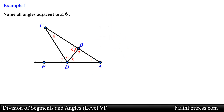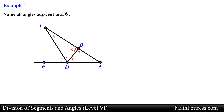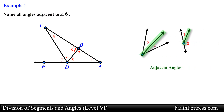Let's start by going over the first example: Name all angles adjacent to angle 6. In this problem we are provided with a diagram and are asked to name all the angles adjacent to angle 6. Recall that adjacent angles have a common vertex and a common side but no common interior points. In the diagram we see that angle 6 has point D as its vertex, so any adjacent angles will also have this point as a vertex. In this case angle 7 and angle 5 fit this description, so angle 7 and angle 5 are adjacent to angle 6 and this is our final answer.